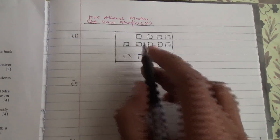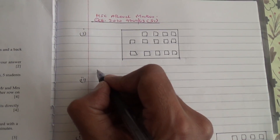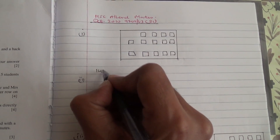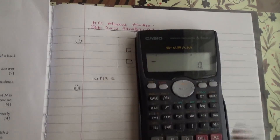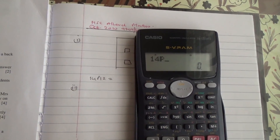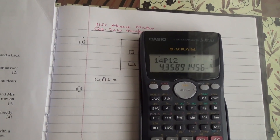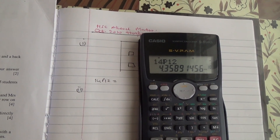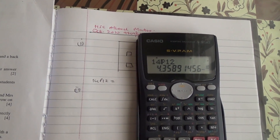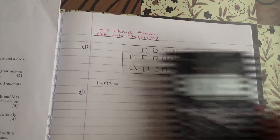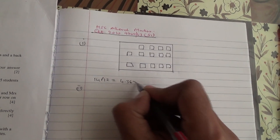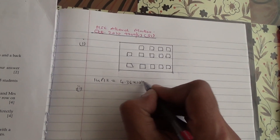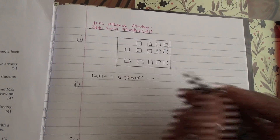For the first part, there's no restriction. We have 14 seats and 12 passengers. Therefore, we're going to be permuting 12 out of 14. So 14P12 gives 4.3589... times 10 to the power of 10. To three significant figures, that's going to be 4.36 times 10 to the power of 10. That's the first part.